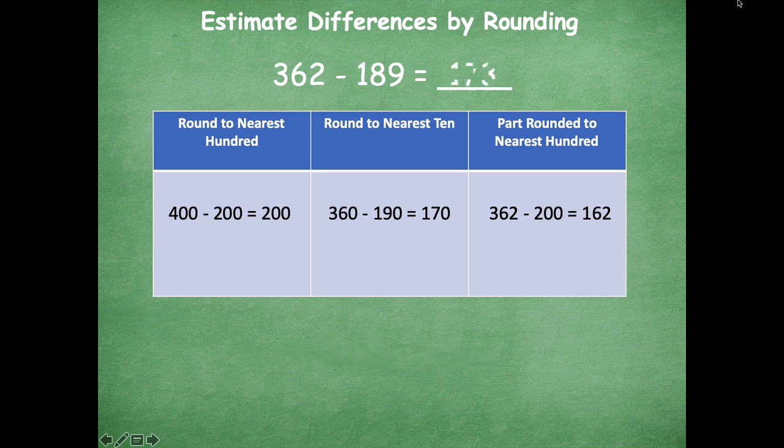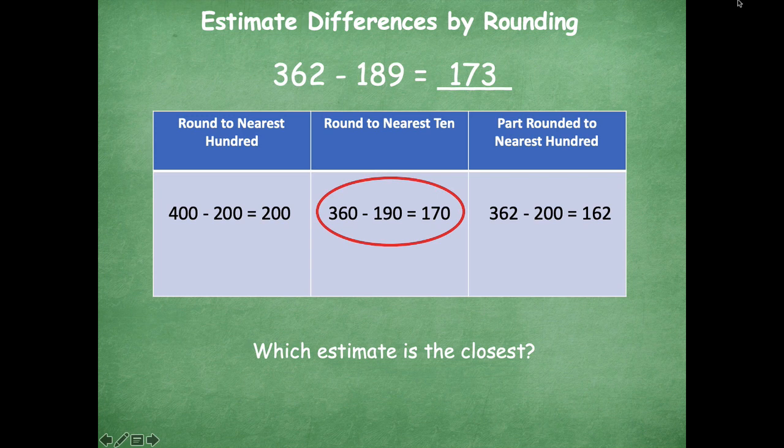I came up with 173. Which estimate is the closest to 173? Was it rounded to the nearest hundred, rounded to the nearest ten, or part rounded to the nearest hundred? Absolutely — when we rounded to the nearest ten, that was the closest.